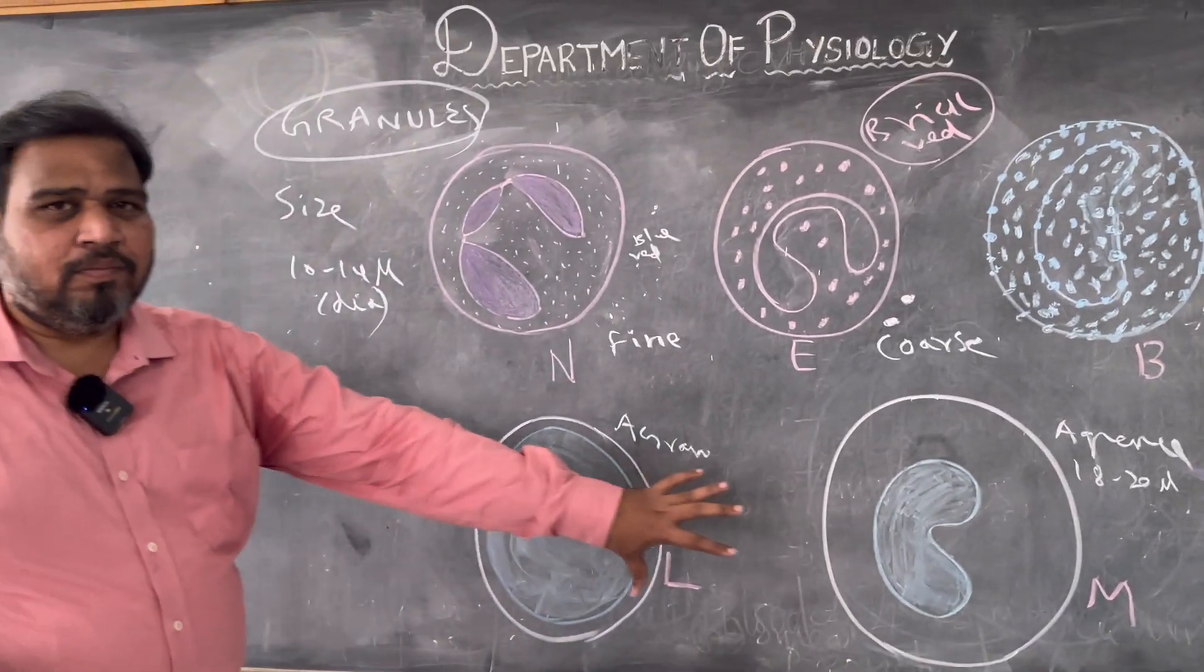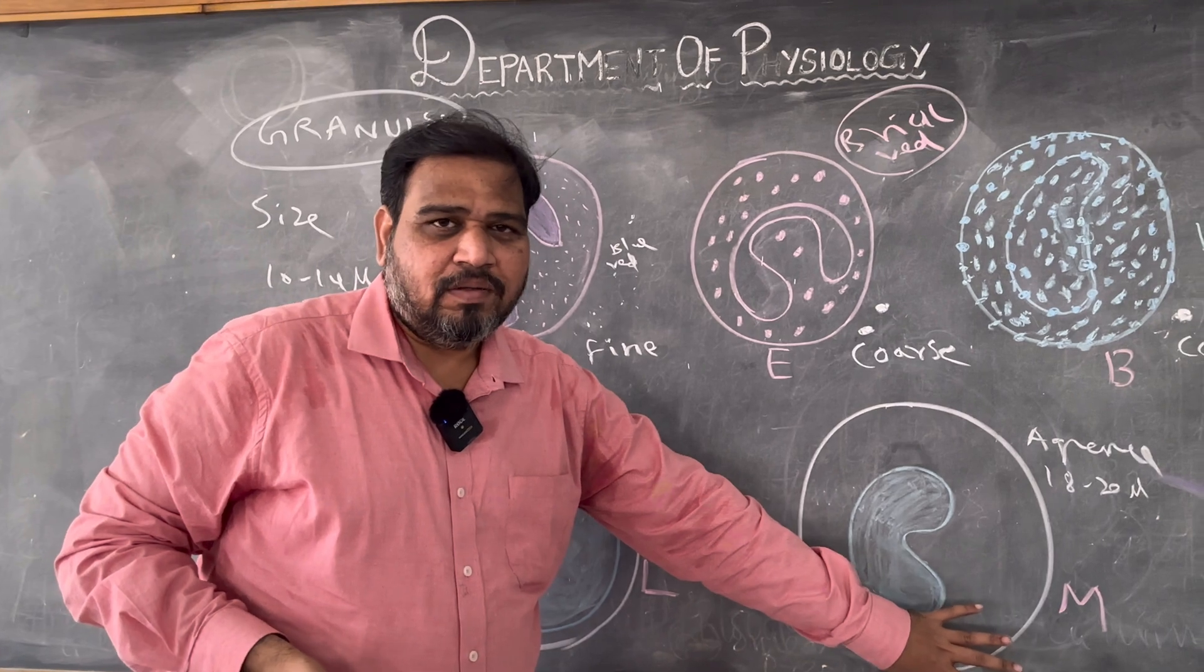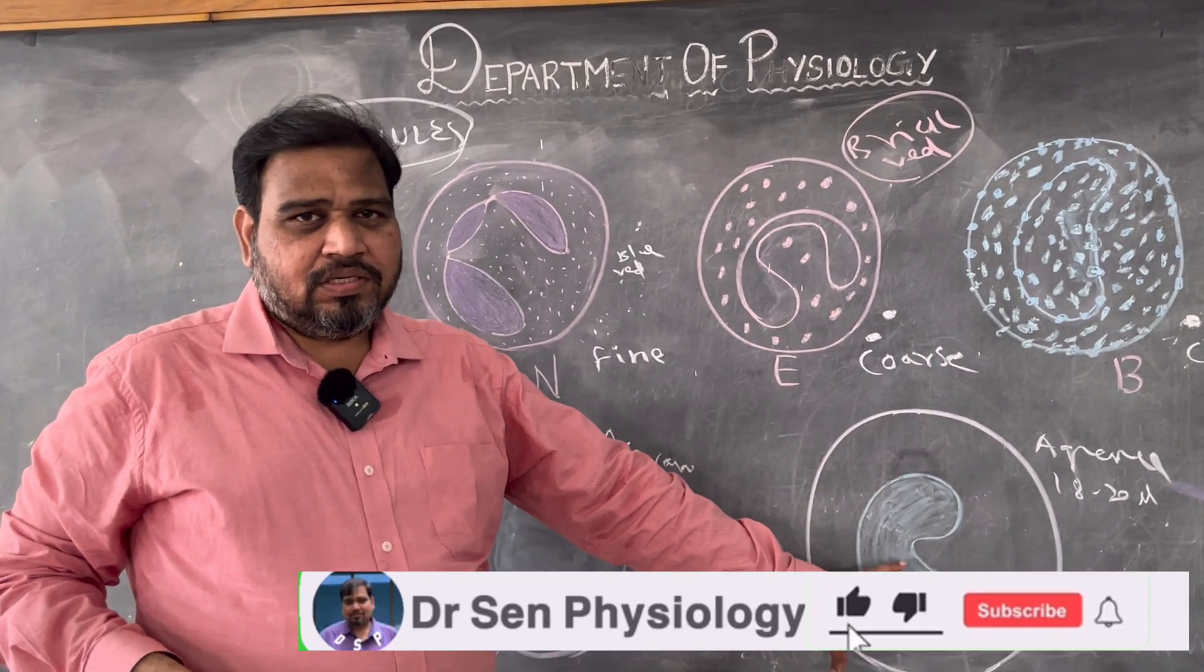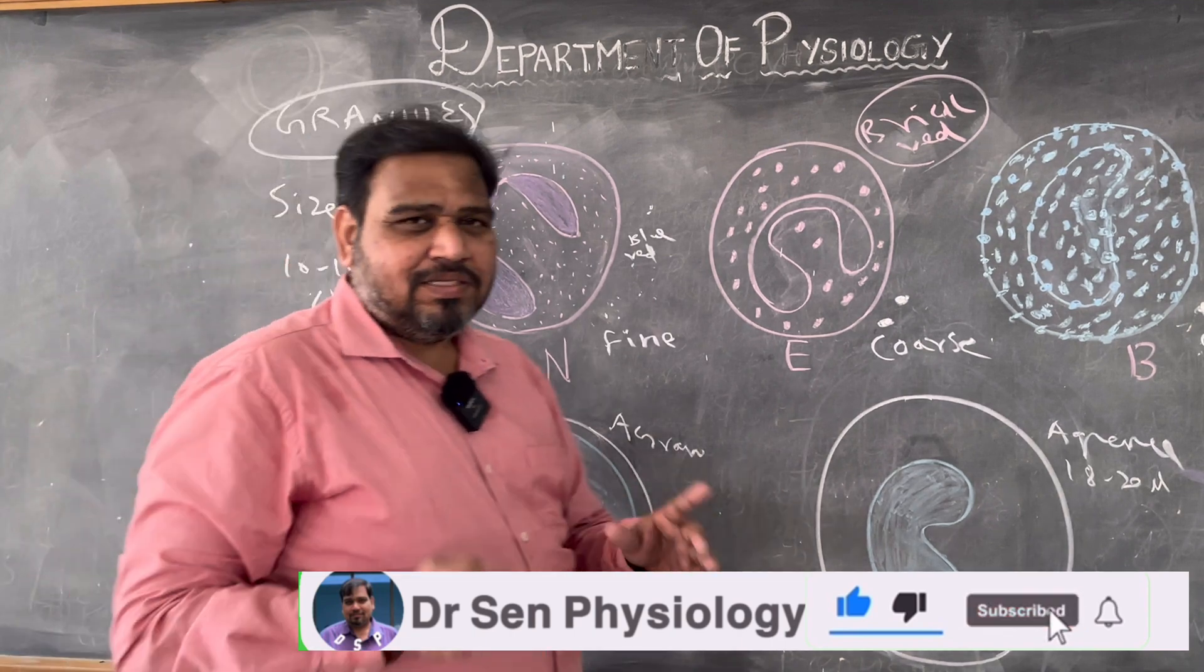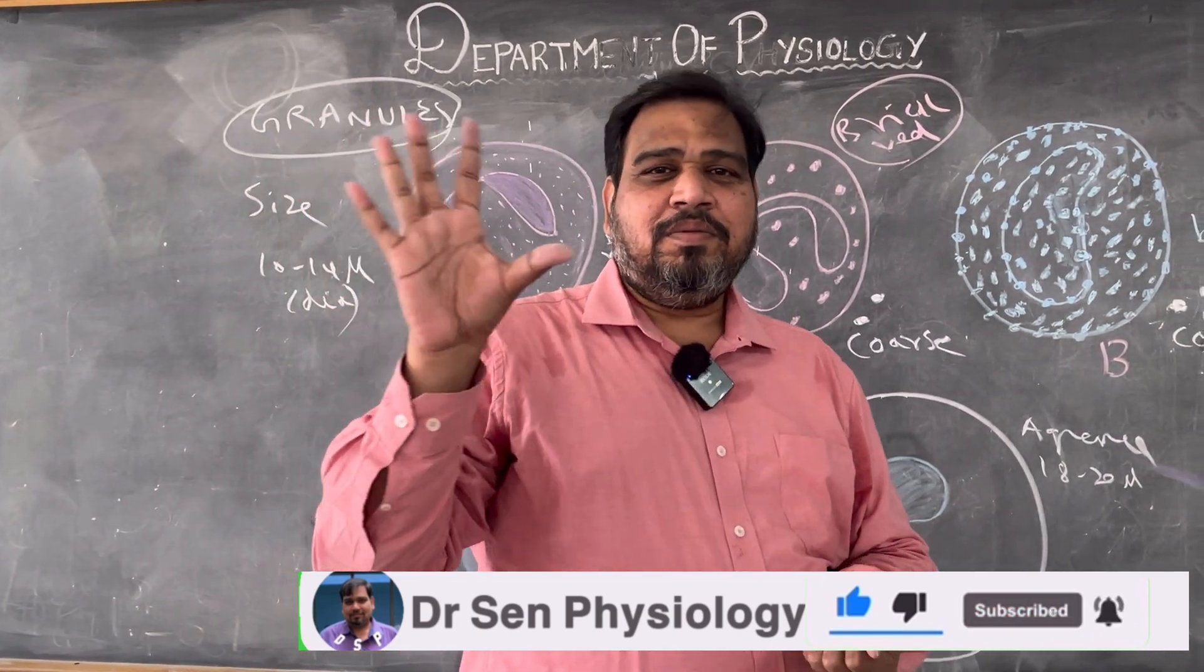Now coming to lymphocyte and monocyte. It is very easy to identify lymphocyte and monocyte because both are agranulocyte to differentiate.